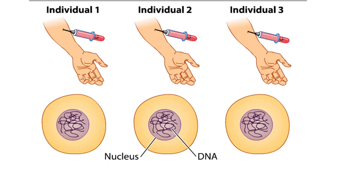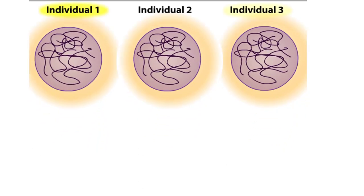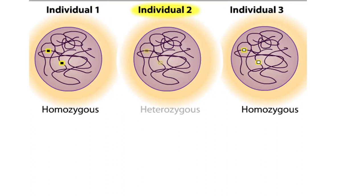If we could see a particular DNA sequence in these cells, we would identify two copies of the sequence, because the cells are diploid and have inherited one DNA copy from each parent. In the example above, individuals 1 and 3 are homozygous for a particular sequence, while individual 2 is heterozygous for this sequence.